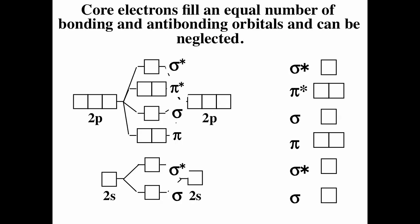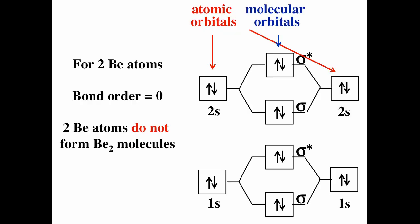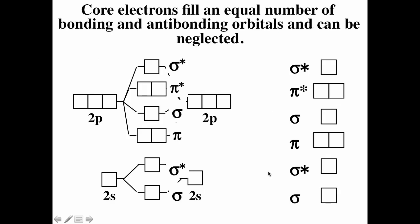One thing to notice is that for second-row elements, the core electrons cancel each other out — two bonding and two anti-bonding for the 1s — so we can neglect the core and only focus on the valence electrons. We can also simplify by looking just at the molecular orbital diagram in the center, showing sigma, sigma star, pi, sigma, pi star, and sigma star for the second row, counting only valence electrons.